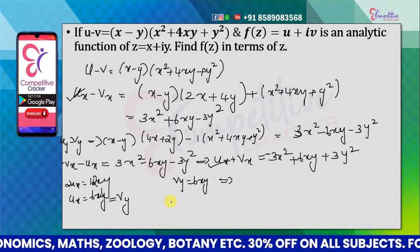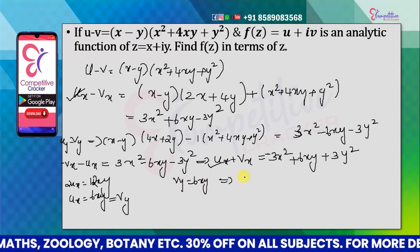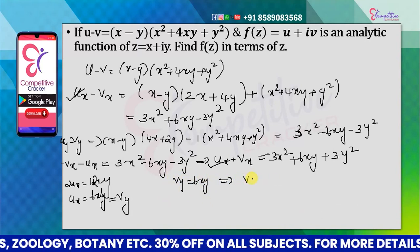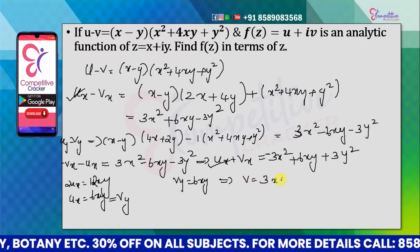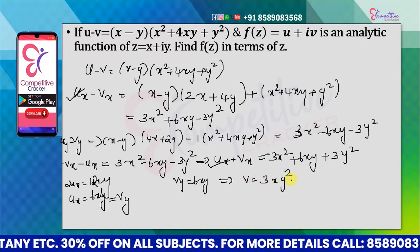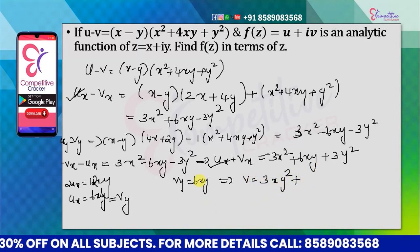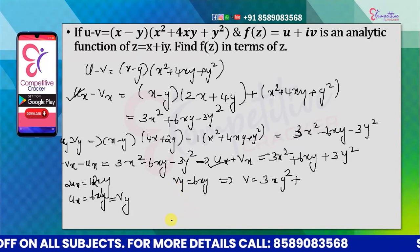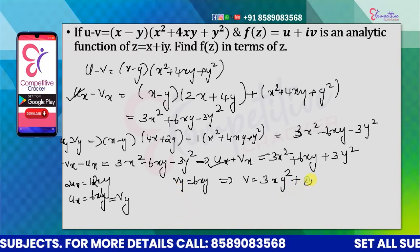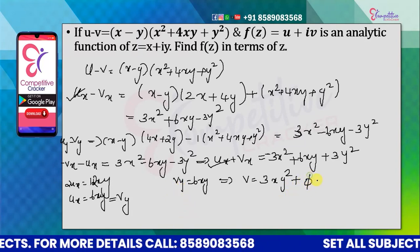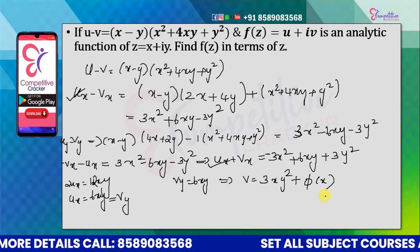Now we have to find v by integrating vy with respect to y. So v equals 3xy squared plus φ(x), where φ(x) is an arbitrary function of x.